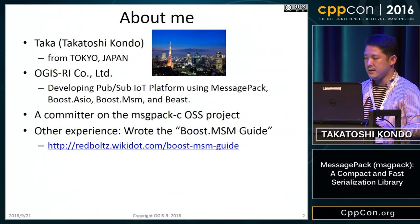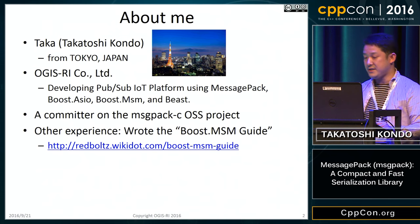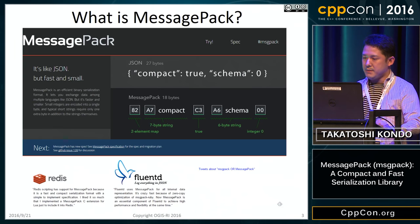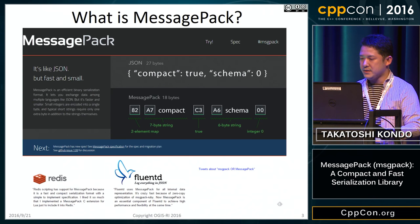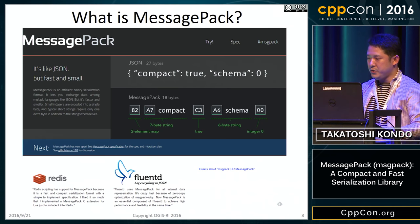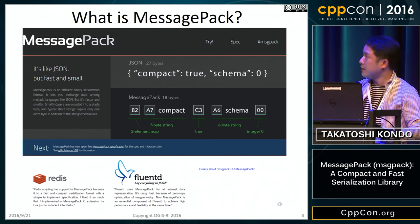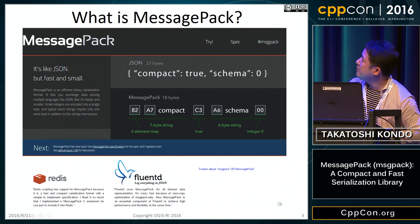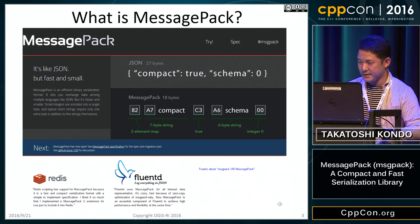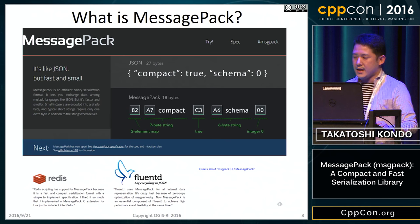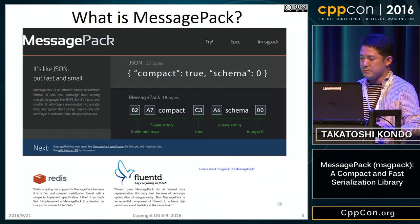MessagePack-C is the C and C++ implementation of the MessagePack specification. MessagePack is a binary data format — it's like JSON. This is an example of some JSON data, and this is the equivalent MessagePack data.